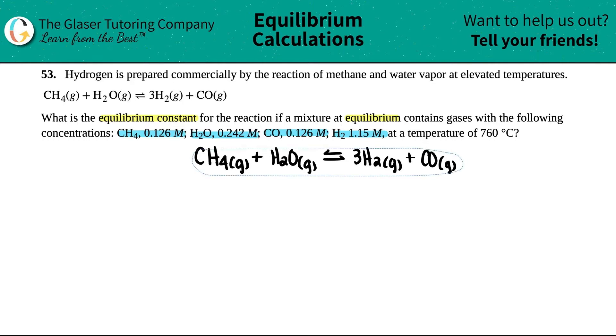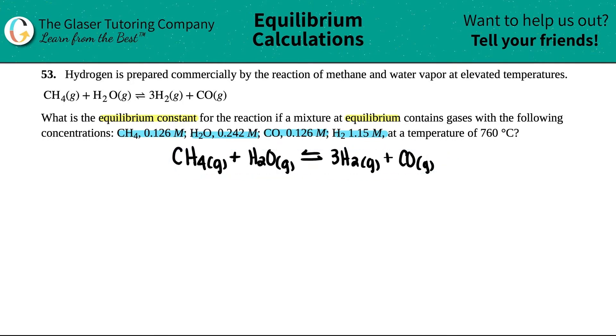The next thing I'm going to do is just write down the values that they told me. So let's see. CH4 was 0.126 M, H2O was 0.242 M, H2 was 1.15 M, and CO was 0.126 M.